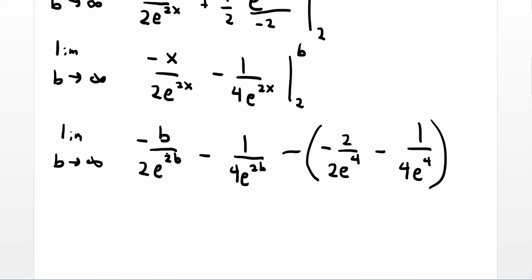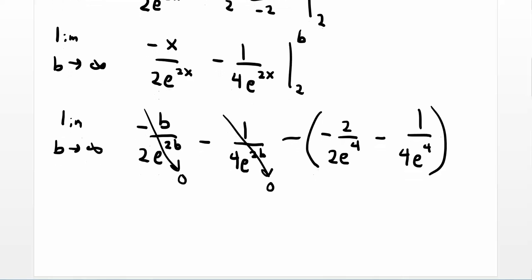And now you can take the limit, remembering that the exponential grows a lot faster than the polynomial. So this is going to go to 0. Same thing here. This is going to go to 0, because exponential grows incredibly fast and overwhelms the numerator. And over here we have plus, cancel these 2s, 1 over e to the 4th plus 1 over 4 e to the 4th.